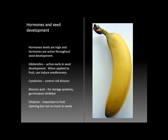Hormones are an important part of seed development. The four main classes covered in this course are: gibberellins, which are active early in seed development and can be used along with parthenocarpy to induce seedlessness; cytokinins, which control cell division as seeds develop; abscisic acid, which is important in developing storage proteins and in inhibiting germination; and ethylene, which is not very important for seed development but is very important for fruit ripening.